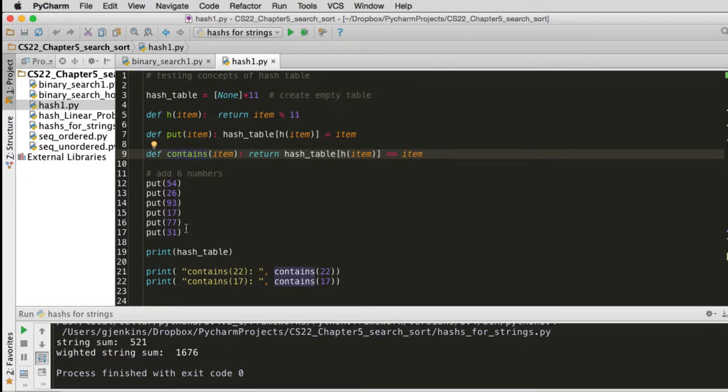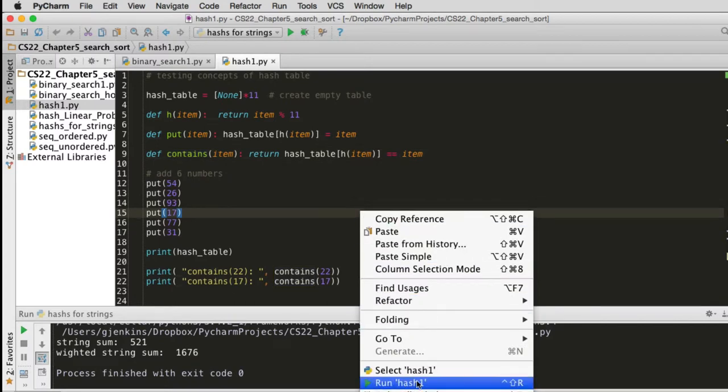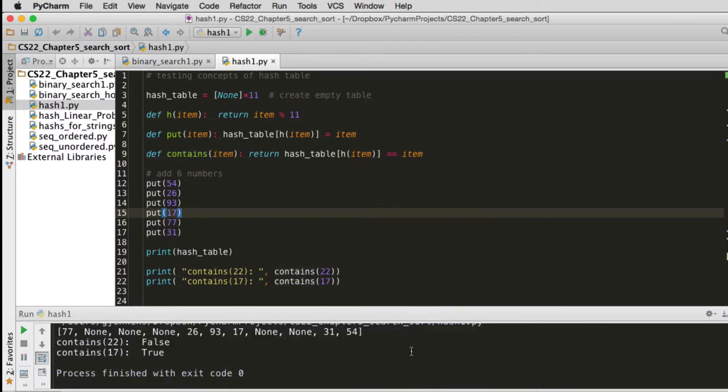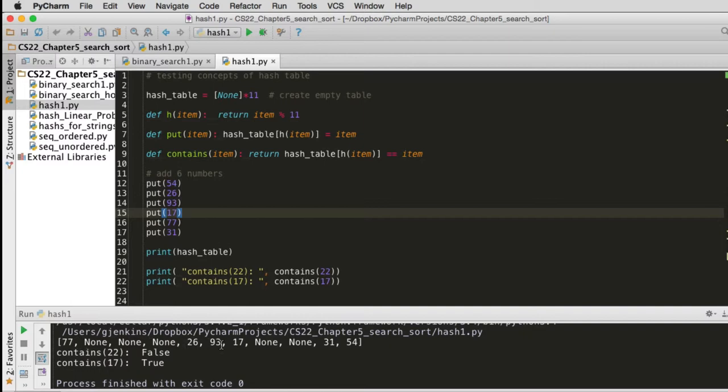So I add some numbers. These are the same numbers that are shown in the book. And I print the hash table. And then I try out the contains function. So our table, we never added 22. So contains 22 will return false. And then there is a 17 in the table, so that should return true. So let's go ahead and run it. And you'll see first it prints out the hash table. So this should match the diagram in the book. And then it says it doesn't contain 22 and it does contain 17. So our hashing works. So that's the basic idea.